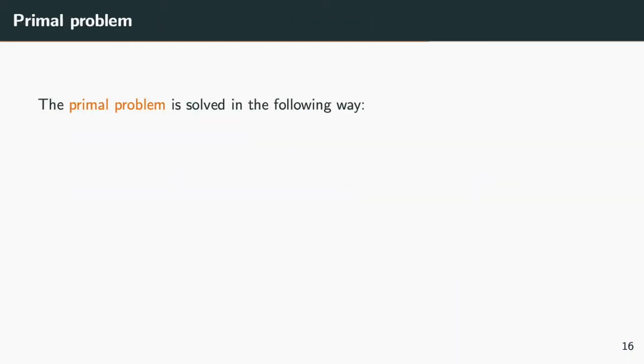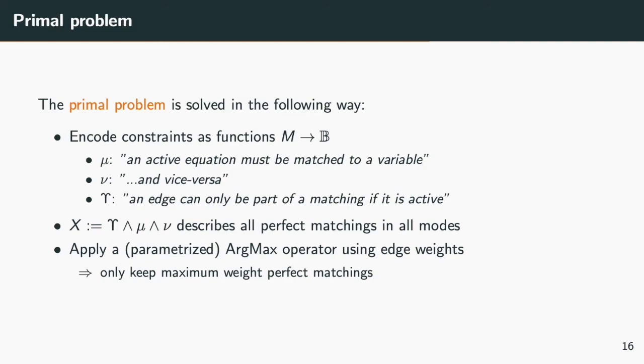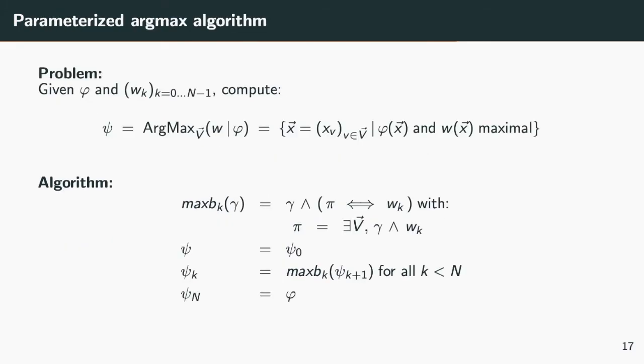Let's move to the primal problem, that is computing for each mode a maximum weight transversal. We start with the computation of all transversals for all modes. This is done by computing three boolean functions represented as BDDs. Mu expresses that every active equation must be matched to a variable. Nu is the converse. And epsilon restricts the matchings to use only active edges in key e. A set of transversals for each mode is simply the conjunction of these three functions.